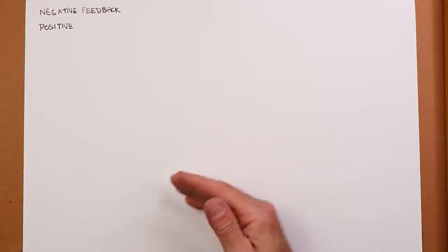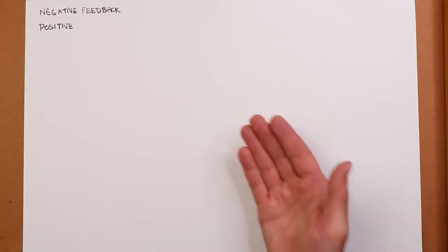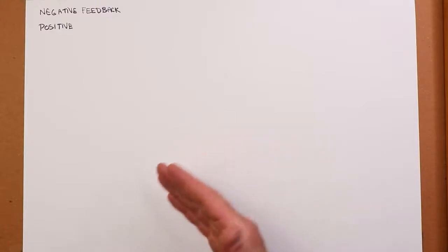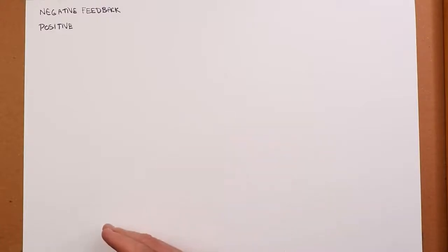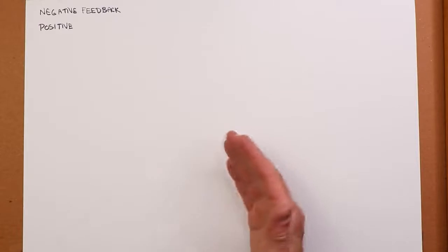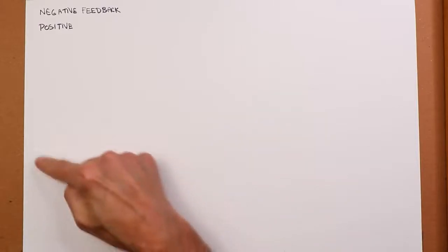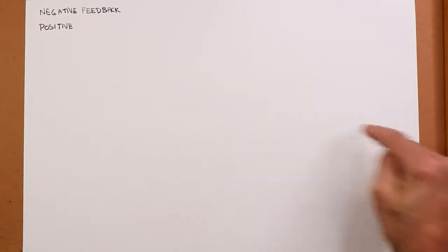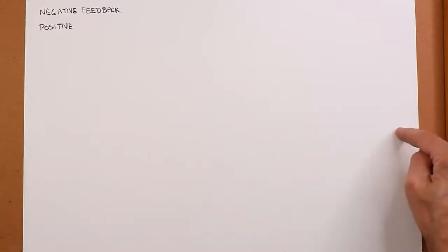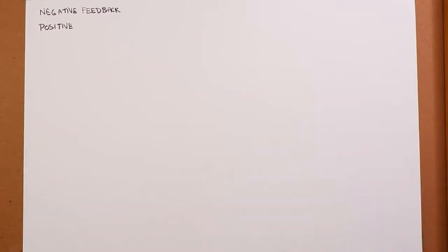If on the other hand you see you're going 70, again you do the opposite — you take your foot off the gas pedal to slow down and bring you back to 65. So you're settling right around that set point, 65. That's what negative feedback does.